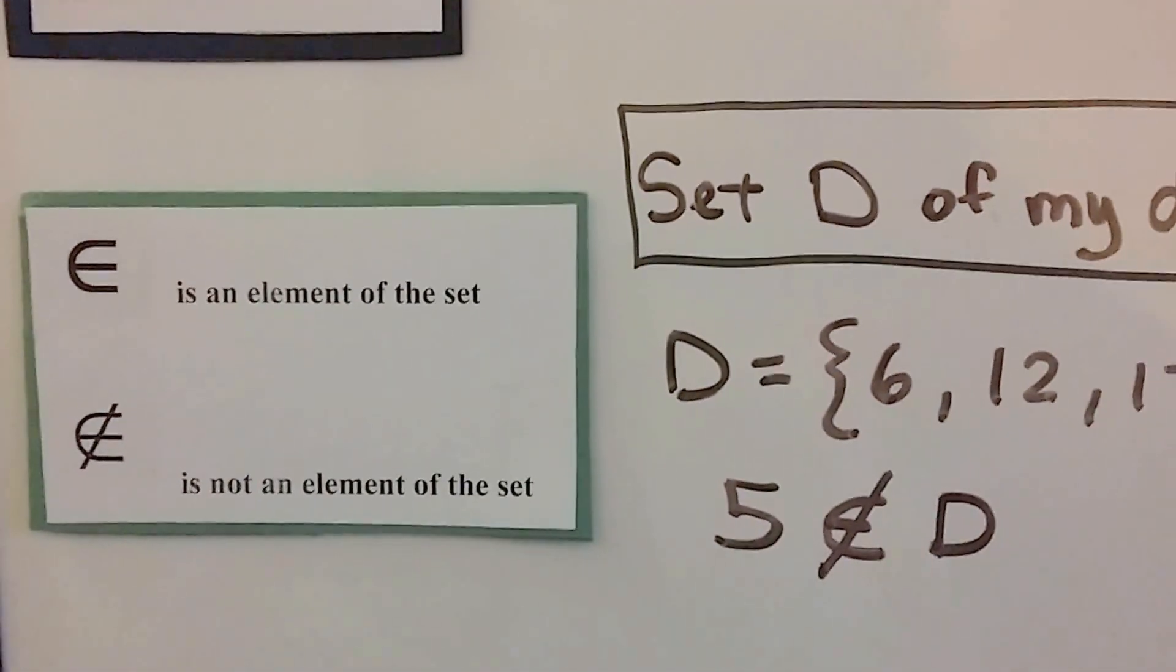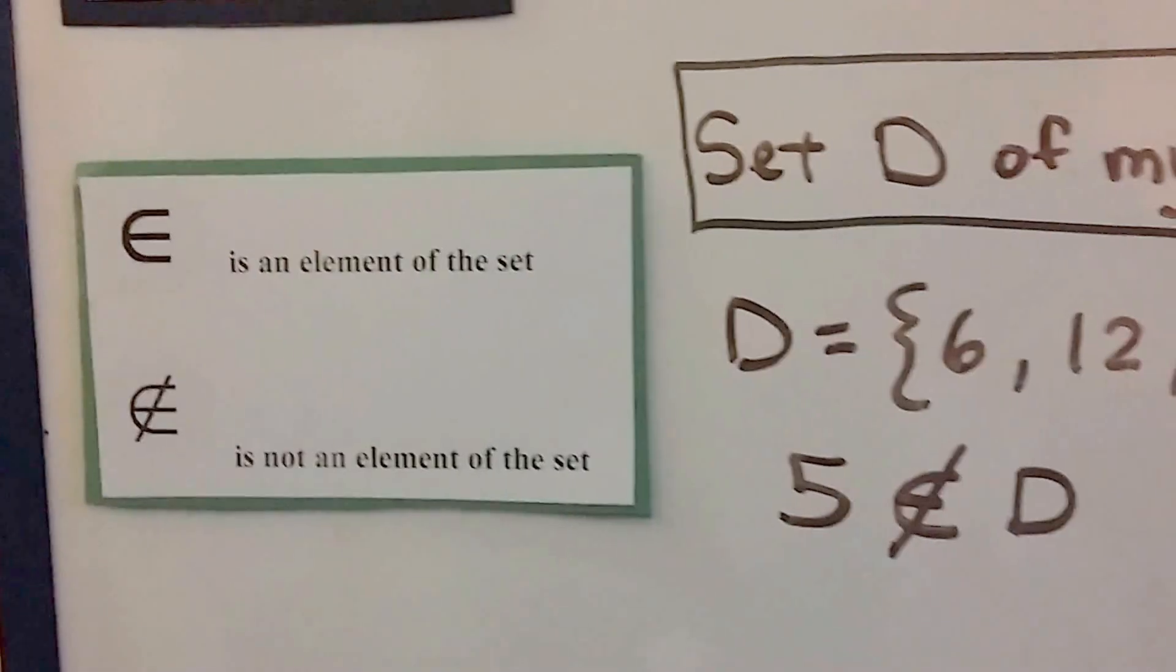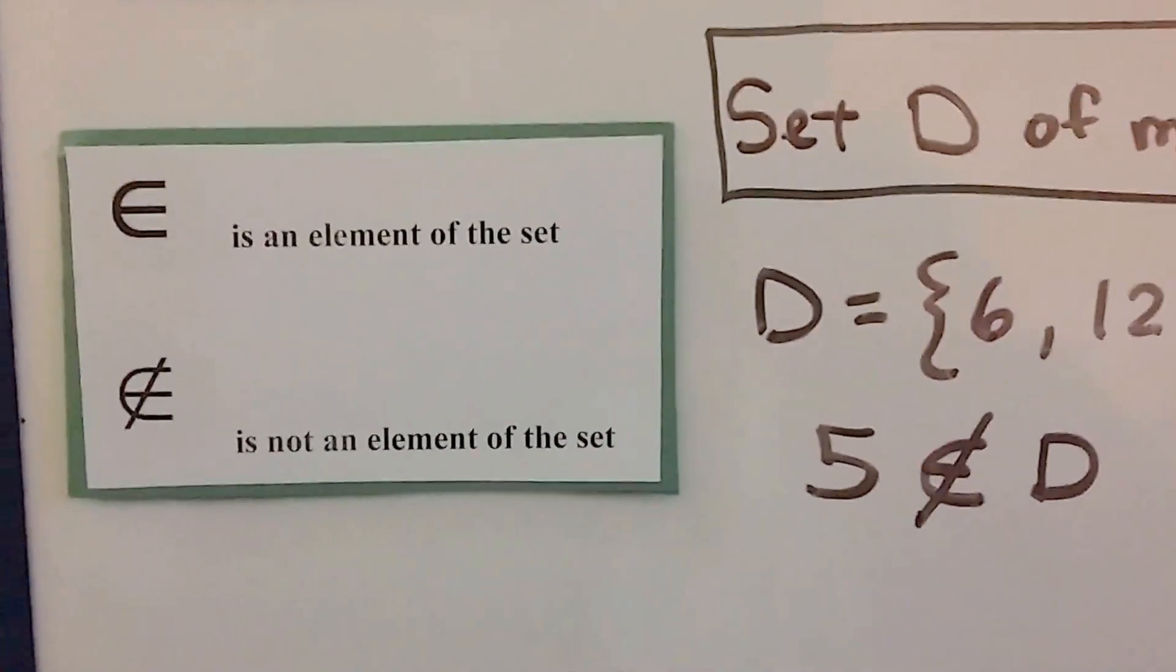This symbol means it's an element of the set, and when there's a line through it, it means it's not an element of the set.